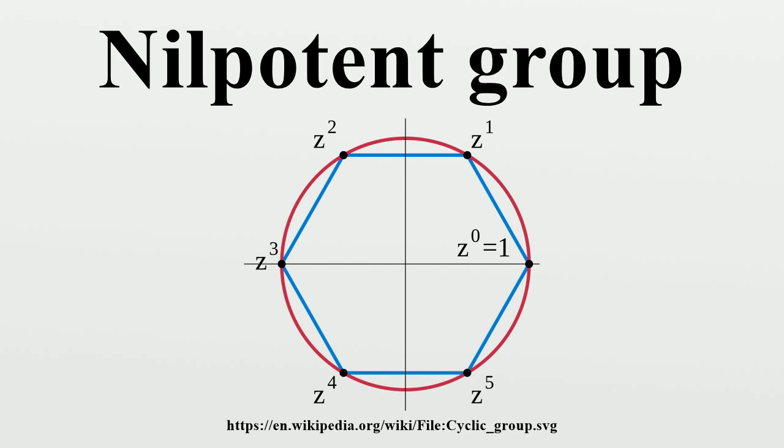It follows immediately from any of the above forms of the definition of nilpotency that the trivial group is the unique group of nilpotency class 0, and groups of nilpotency class 1 are exactly the non-trivial abelian groups.